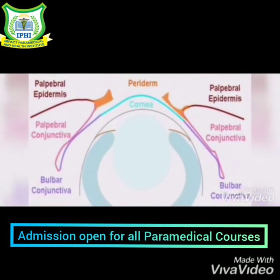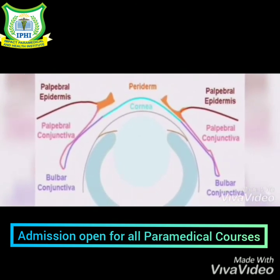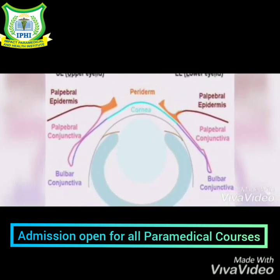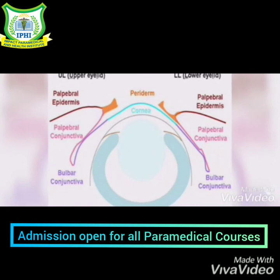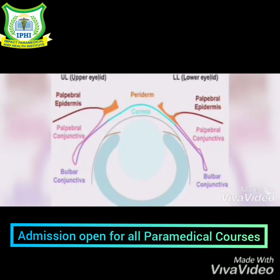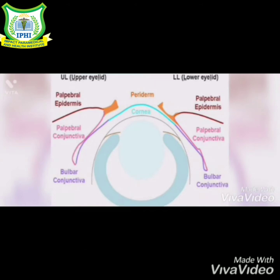The conjunctiva can be divided into three parts: palpebral conjunctiva, bulbar conjunctiva, and fornical conjunctiva. The palpebral conjunctiva is the part of the conjunctiva — a clear membrane that coats the inside of the eyelids — and it can be divided into marginal, tarsal, and orbital conjunctiva.